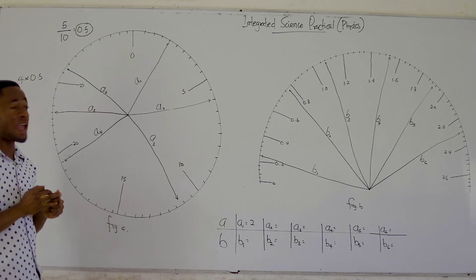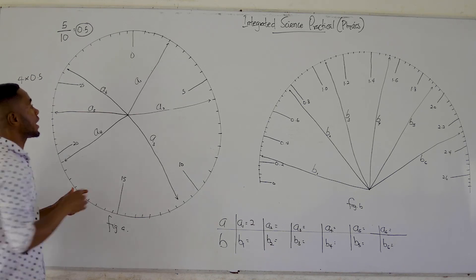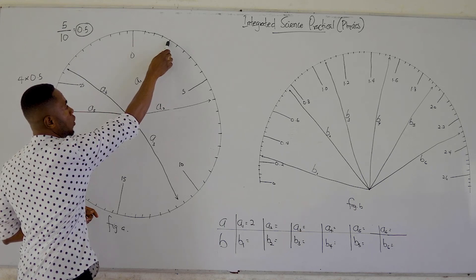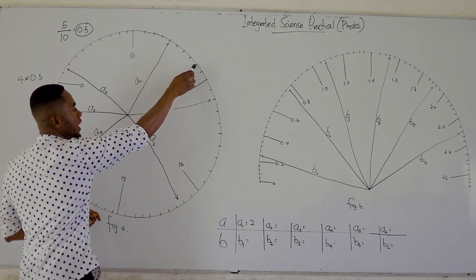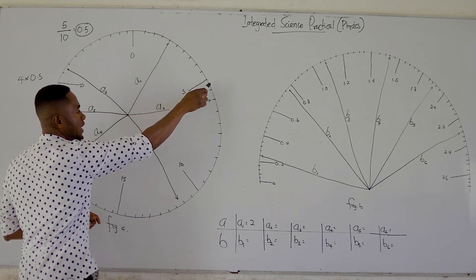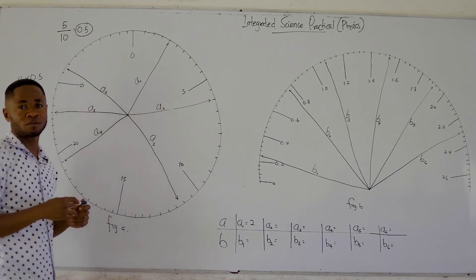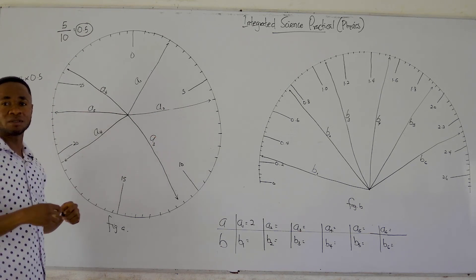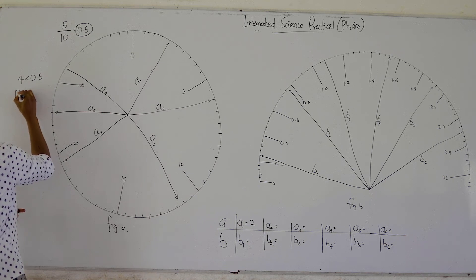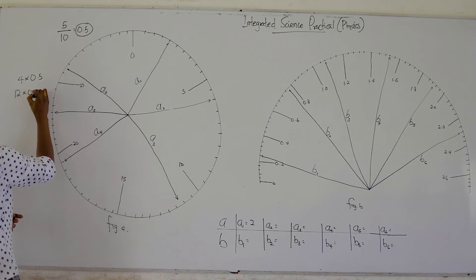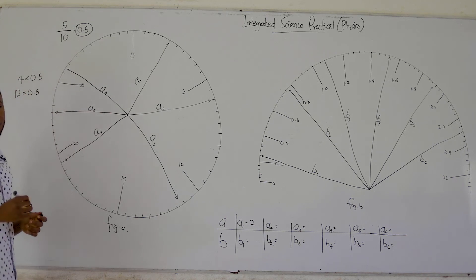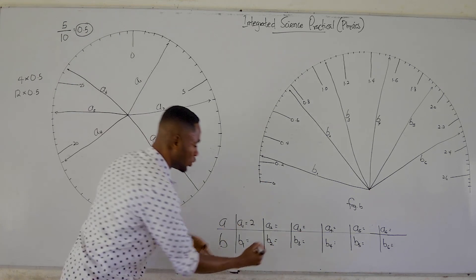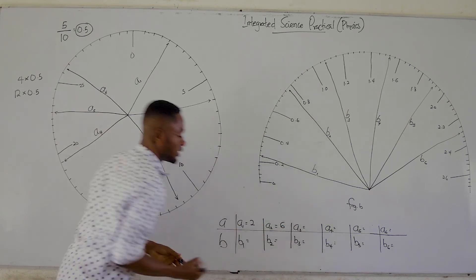Let's try reading a2. Count again from zero: one, two, three, four, five, six, seven, eight, nine, ten, eleven, twelve. A2 is the twelfth graduation. So 12 times 0.5 — punch that on your calculator — gives us six. So a2 equals six.